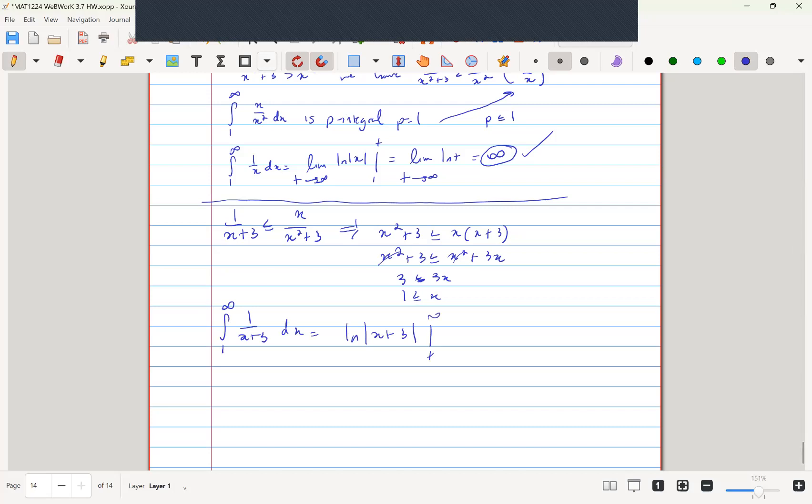From 1 to t, which is ln of t plus 3 minus a constant, which is ln of 4, but that will just diverge to infinity.